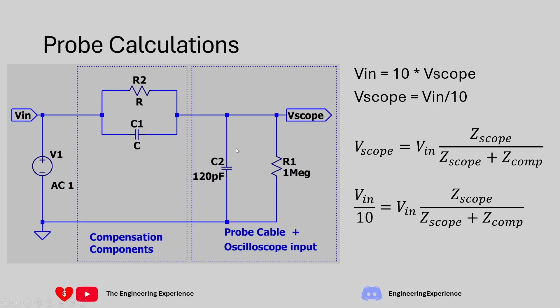In the DC case you can ignore the capacitors and simply work out the resistor values using the potential divider equation. However, I'll go through it in a slightly different way so we can calculate both the resistor and capacitor values in one go — using the potential divider equation on the complex impedance representation of the circuit, replacing the components with their Z values.